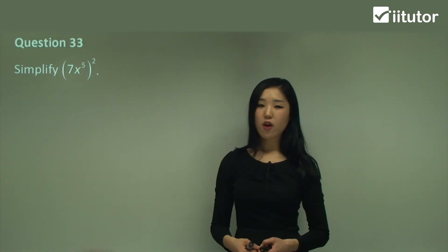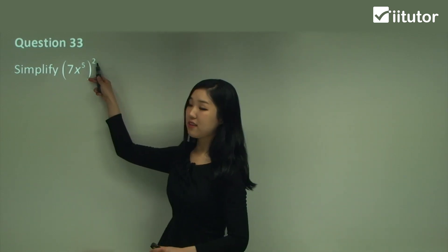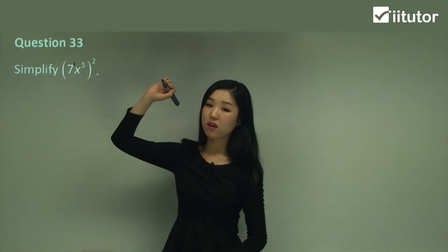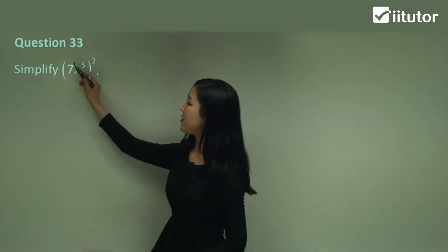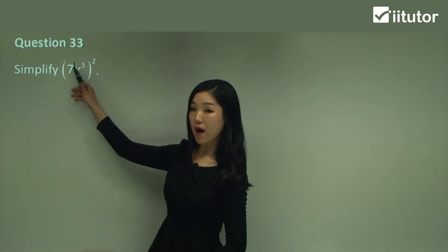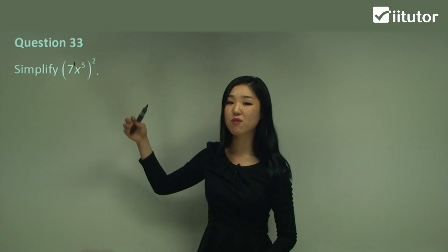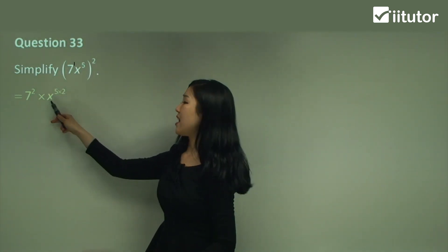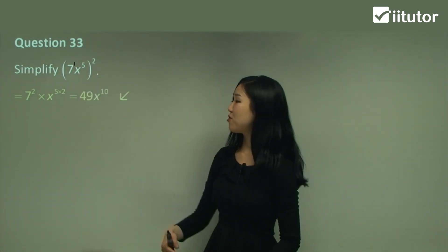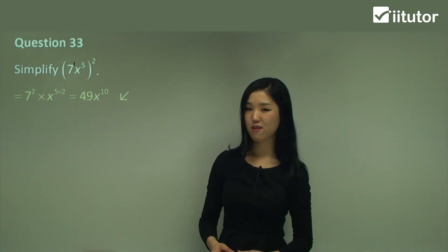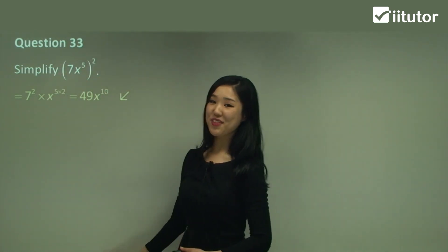Question 33. If there are brackets with a power outside, you must apply that power to everything inside the brackets. So we have 7 to the power of 1, and the outside power is 2. The law of powers tells us we multiply 2 with 1, and also multiply 2 with 5. So everything inside the brackets gets multiplied. That gives 7 to the power of 2 — because 1 times 2 is 2 — and x to the power of 5 times 2, which is 49x to the power of 10, because 7 squared is 49. Make sure you apply the power to the 7 as well — that's what a lot of people forget.